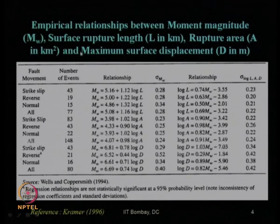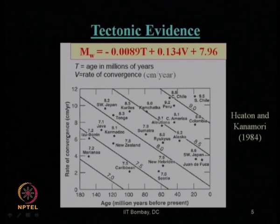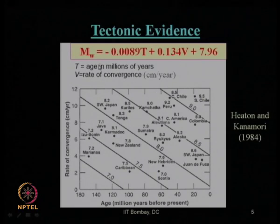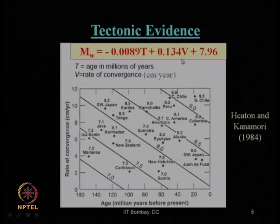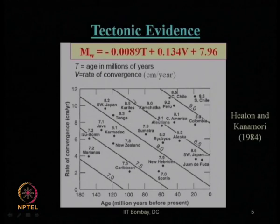From tectonic evidence — plate tectonic movement — the earthquake moment magnitude can be estimated using the expression proposed by Hayton and Kanamori in 1984. This expression is given in terms of the age of the plate in millions of years and the rate of plate movement in centimeters per year, based on data collected up to 1984.